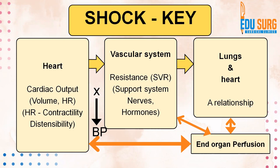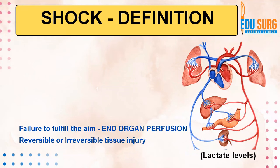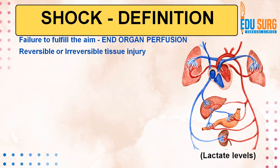When all three systems are functioning well — oxygenation is good, vascular resistance is good, and cardiac output is good — end organ perfusion will be maintained. This is essentially the physiology of the circulatory system and the pathophysiology of shock in one overview, making it easy to remember and understand. Now, coming to the definition of shock: the best overall determinant that has been accepted is the lactate level. In essence, shock is failure to fulfill the aim of this system — end organ perfusion. Failure to achieve good end organ perfusion is basically shock.